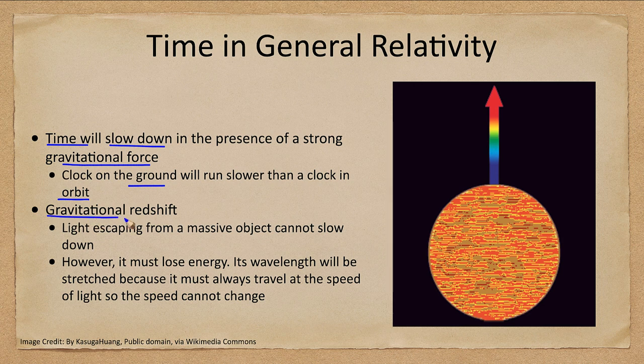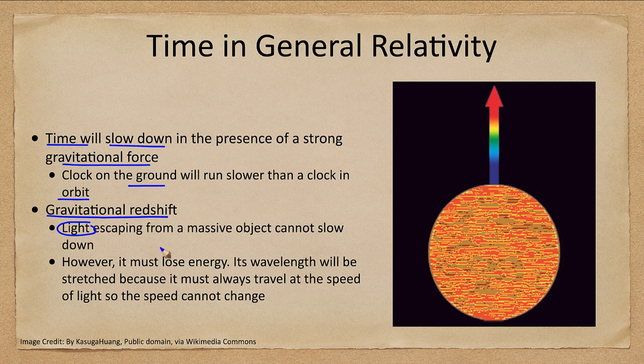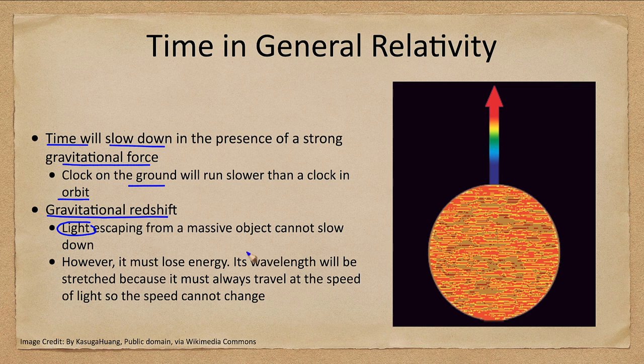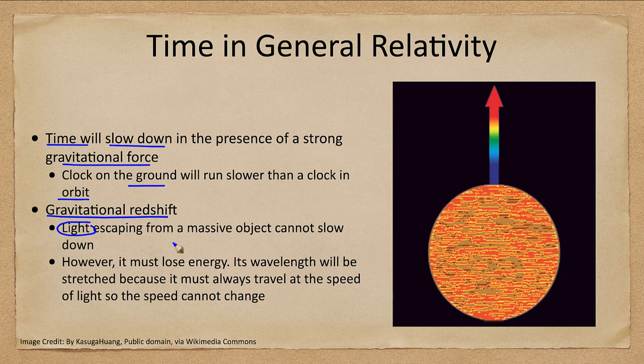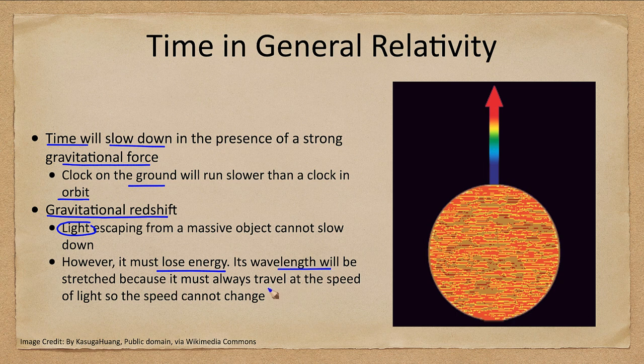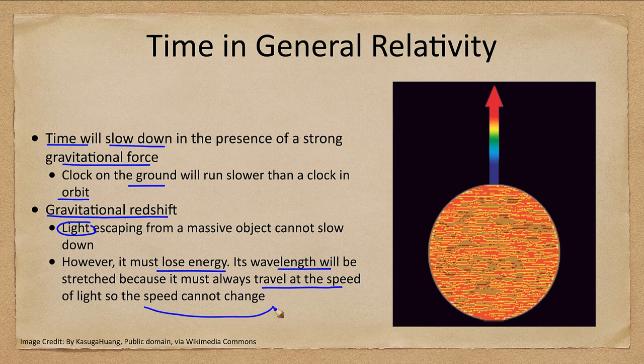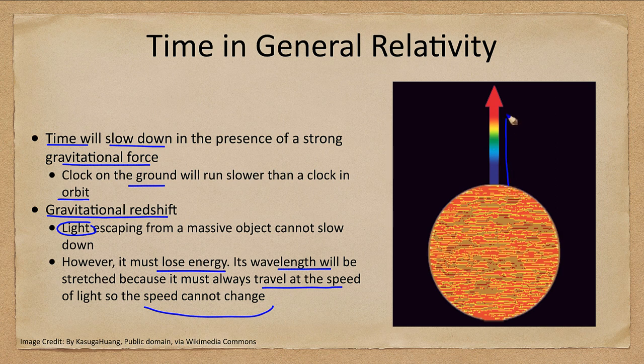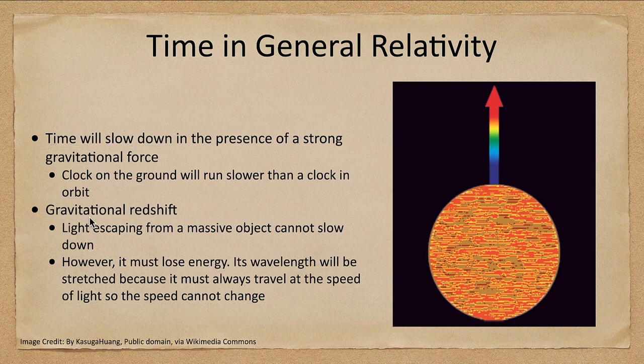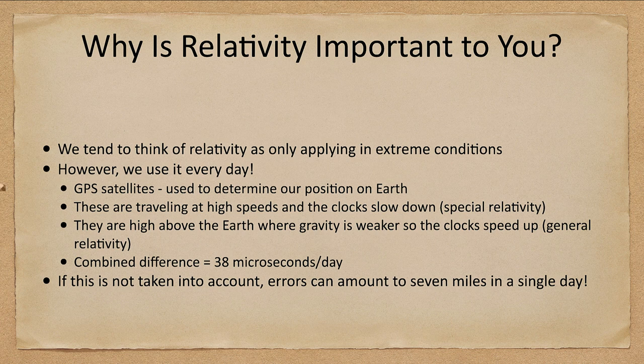We also have a gravitational redshift. What happens to light escaping from a massive object? Normally when something tries to escape from an object, when we launch something, it slows down under gravity pulling it back. But light can't slow down, but it has to lose energy. Therefore, its wavelength will be stretched, and it must always travel at the speed of light. So that speed cannot change, but its wavelength can. So what can be sent out as blue light can end up escaping a very massive object as red light. And depending on the strength of gravity, this could be even more significant.